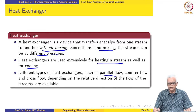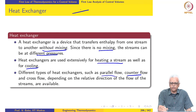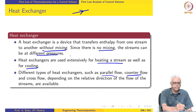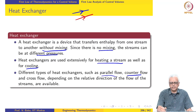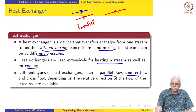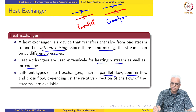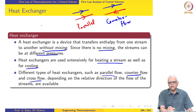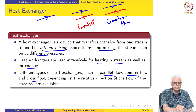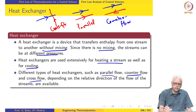In a parallel flow heat exchanger, the heated or cooled stream and the heating or cooling stream both flow in the same direction. In the case of a counter flow heat exchanger, one stream moves in one direction and the other stream moves in the opposite direction. In the cross flow heat exchanger, as the name suggests, the streams flow in perpendicular directions — one stream flows this way and the other flows perpendicularly — but without mixing.